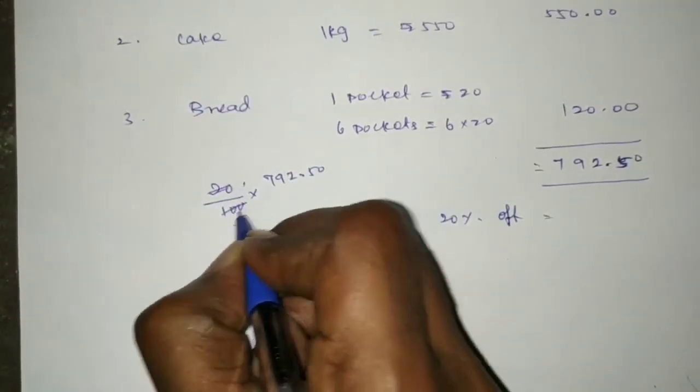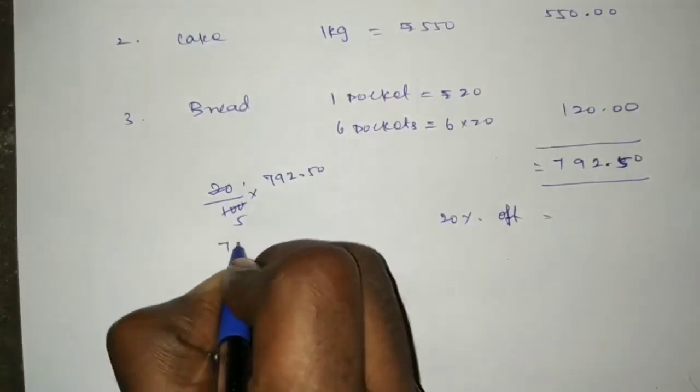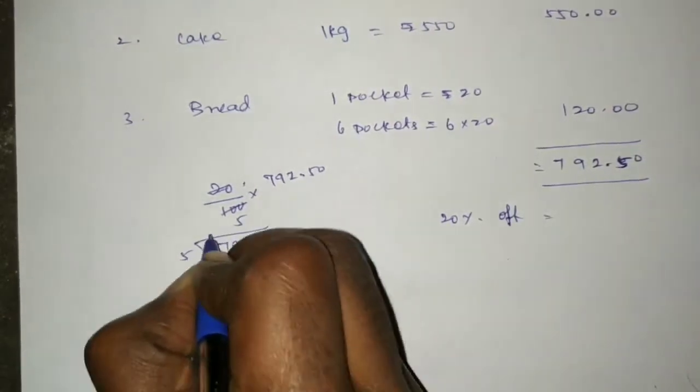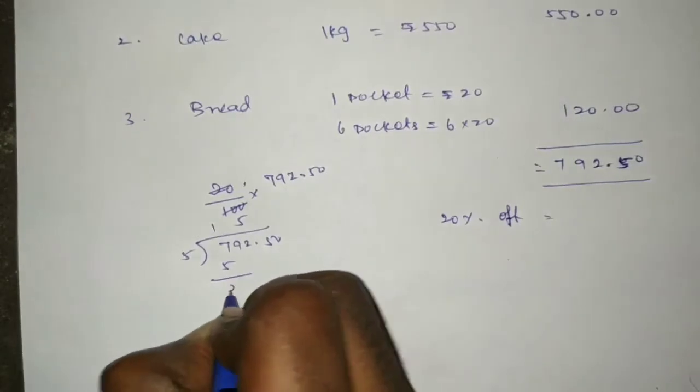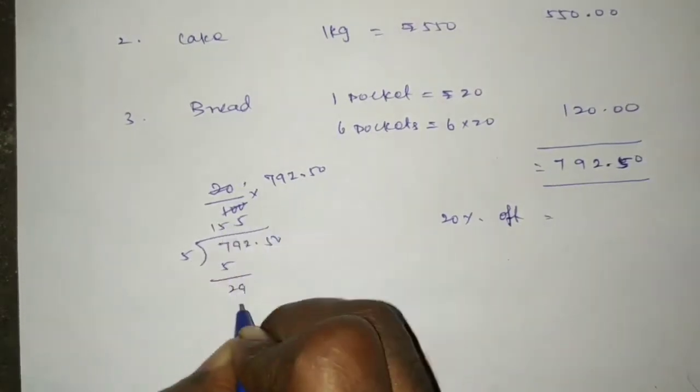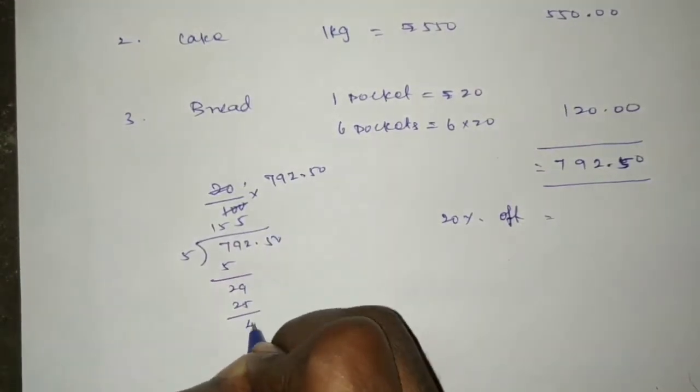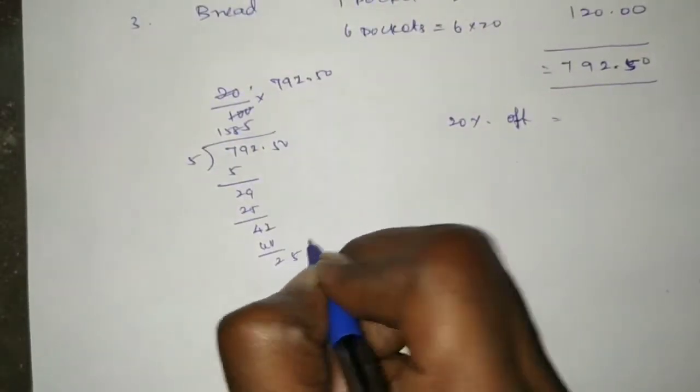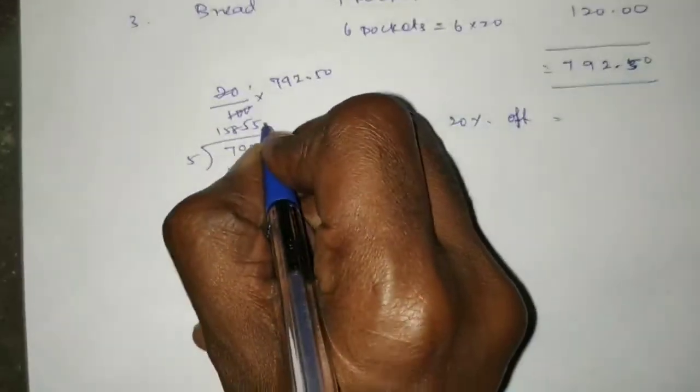We can cancel and divide 792.50 by 5. Working through the division: 5 into 7 is 1 time, balance 2 makes 29. 5 into 29 is 5 times, balance 4 makes 42. 5 into 42 is 8 times, balance 2 makes 25. 5 into 25 is 5 times exactly. The result is 158.50.